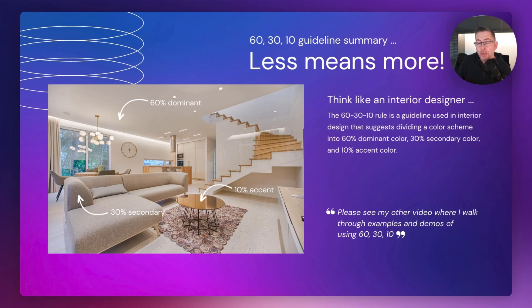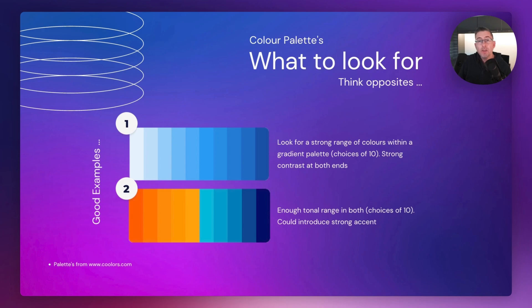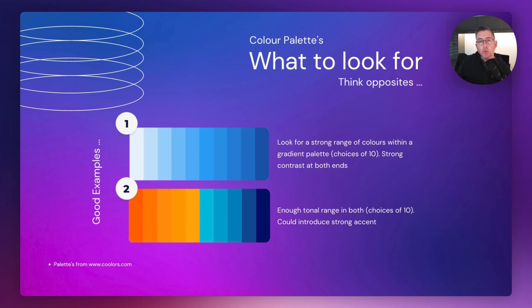Here are some palettes I've extracted from the Coolers website — we'll go over to that in a second and I'll show you how it works within FlutterFlow. In example number one, you can see we've got a lovely range with a nice gradient from a light blue on the left hand side through to a really pleasing blue color on the right. There's enough range in that palette to build a really good looking mobile application.